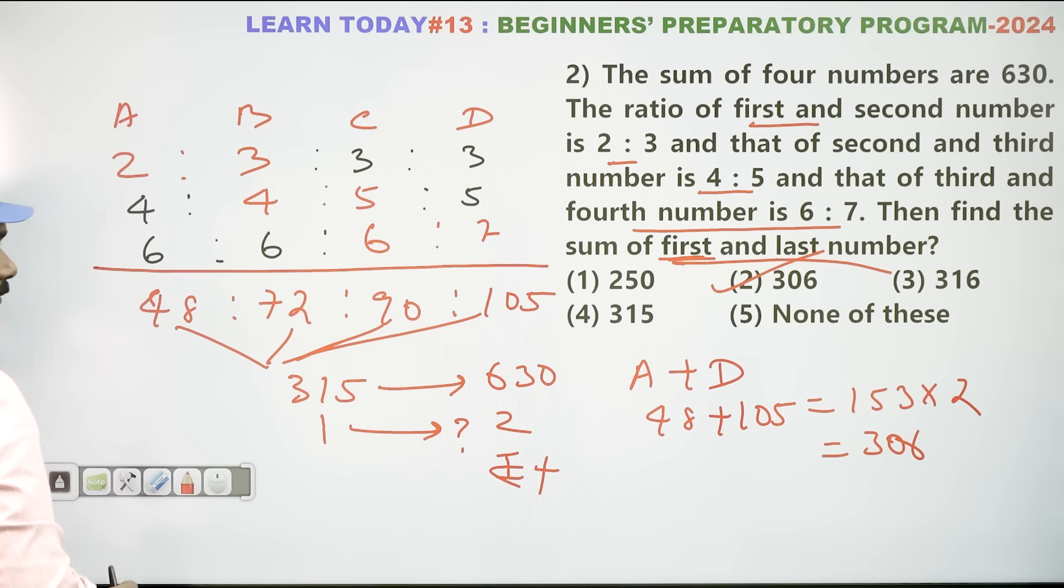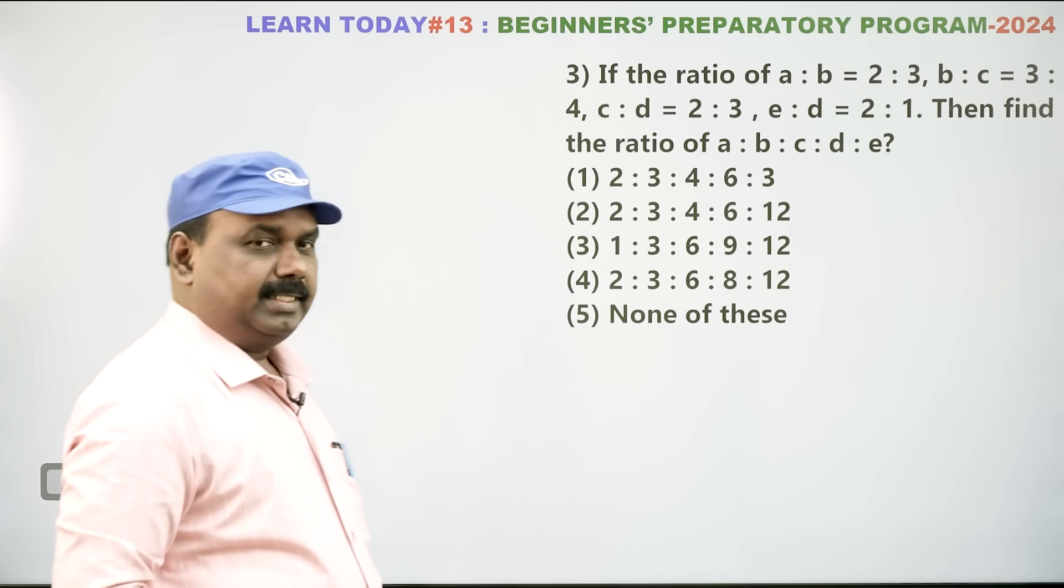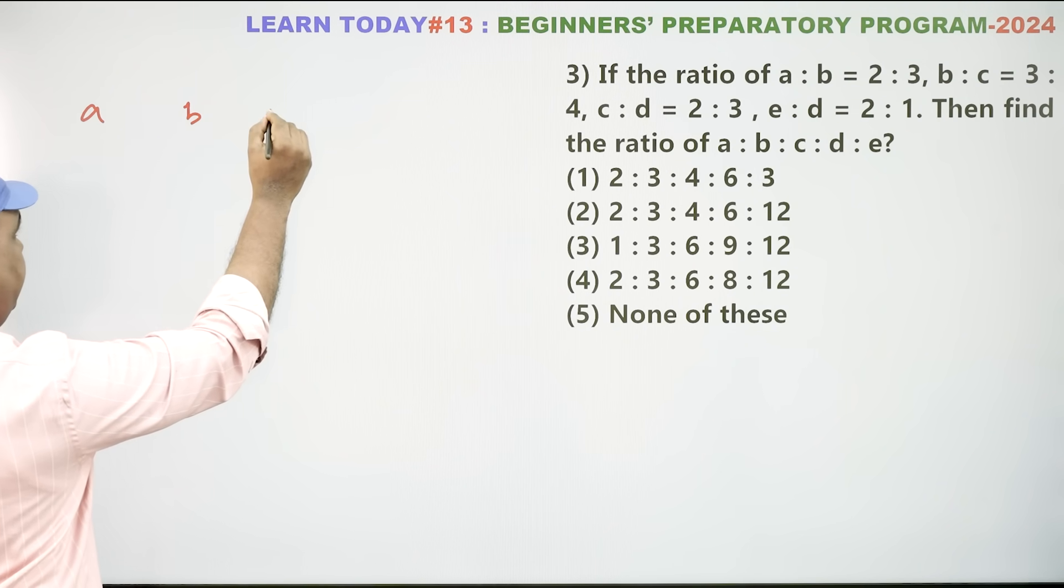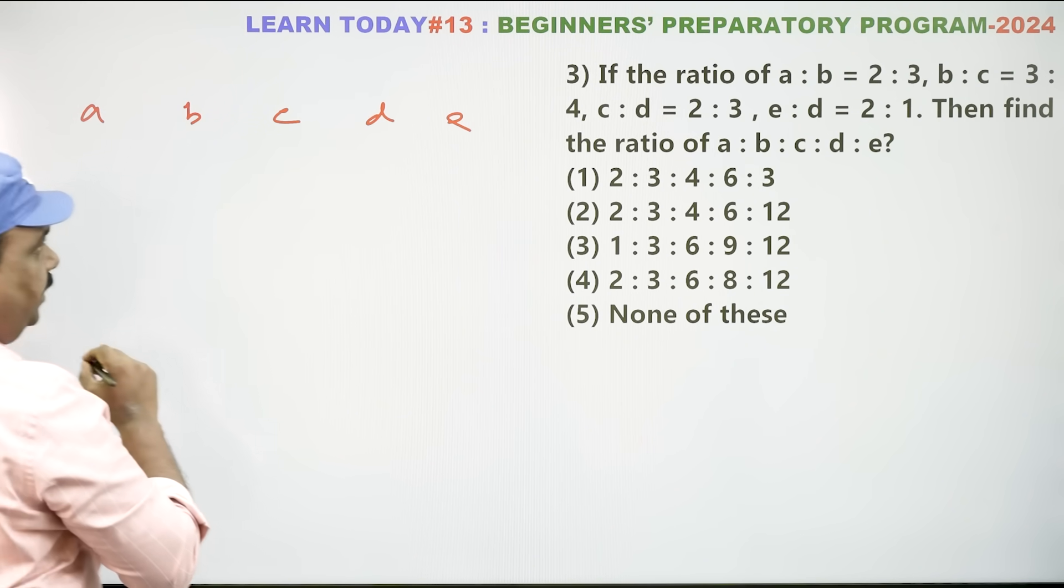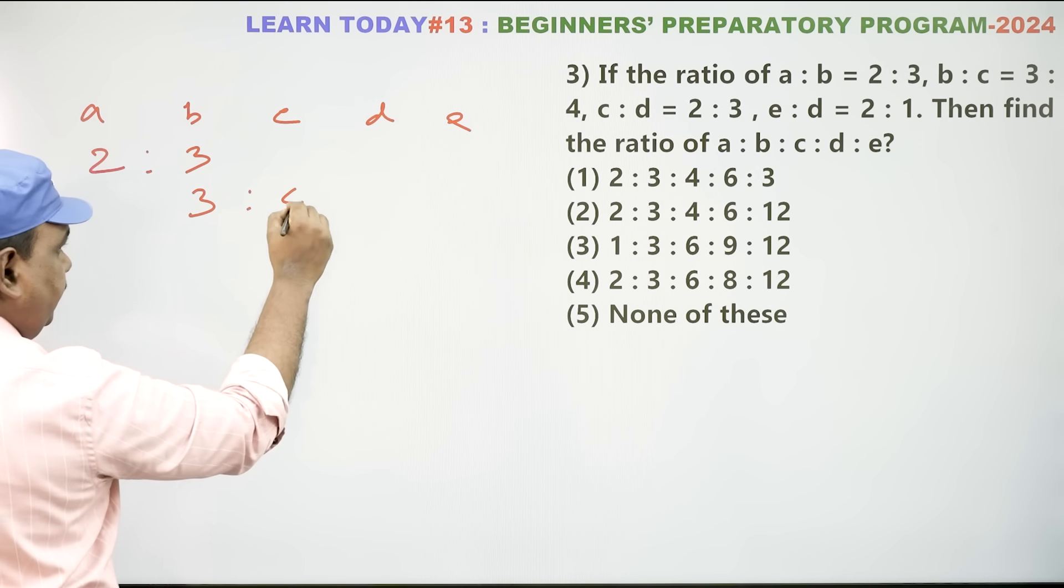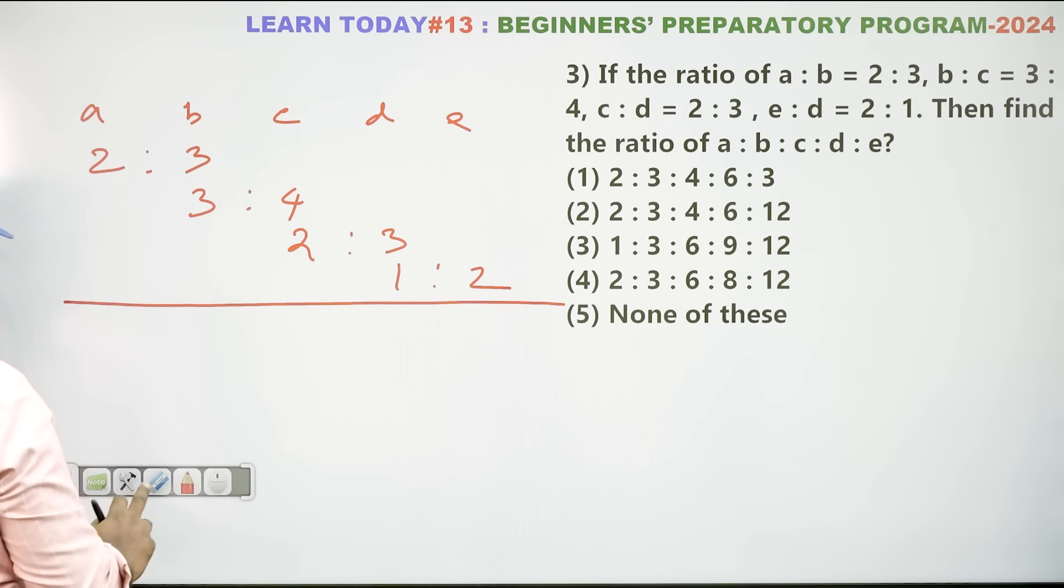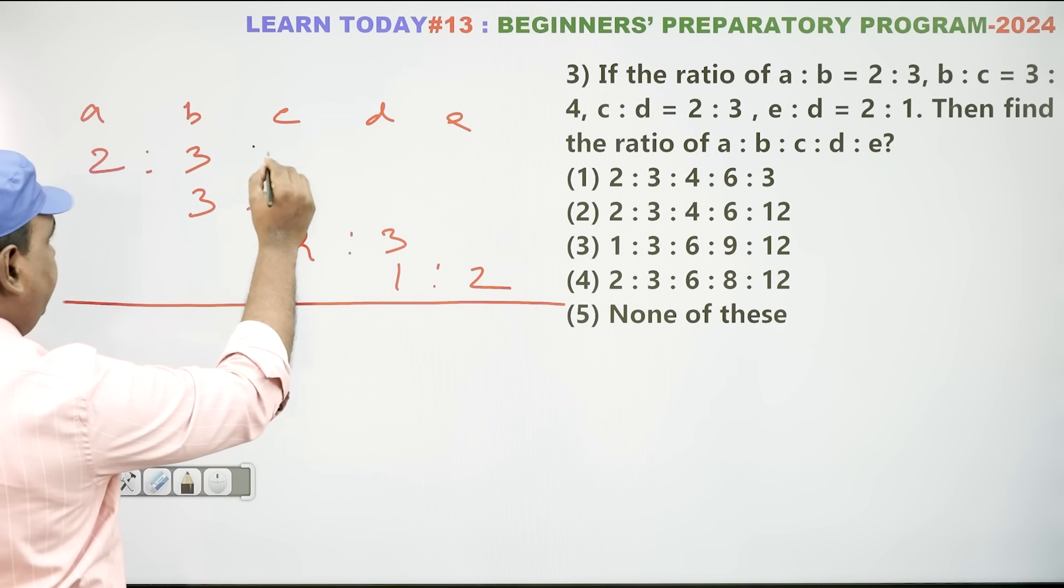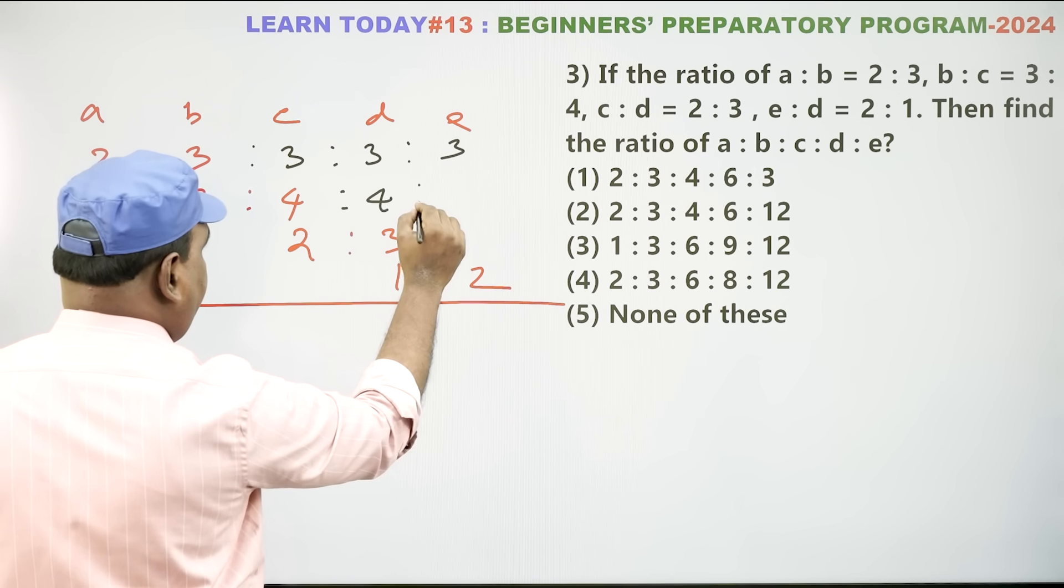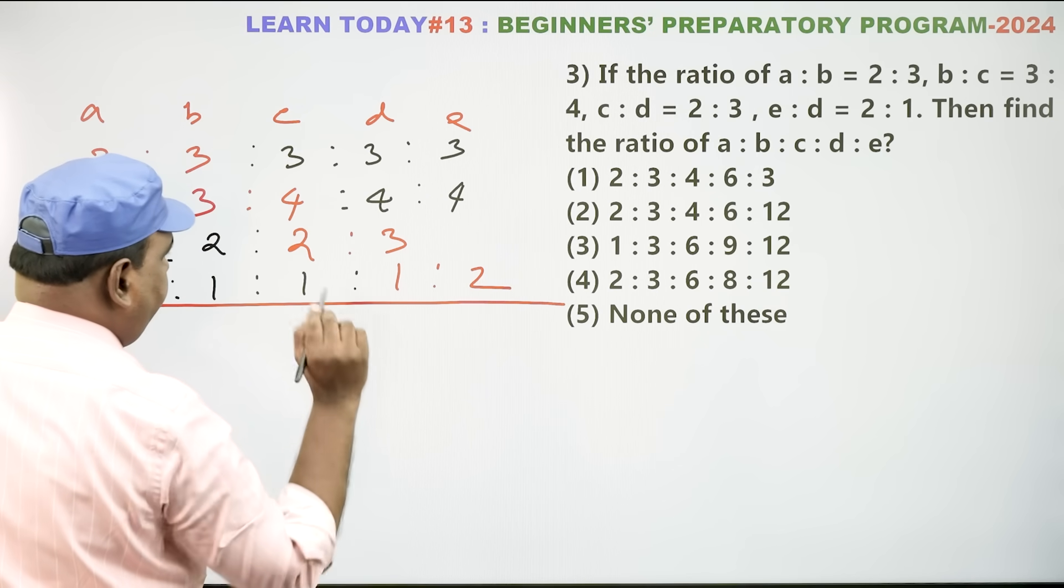Then next. You need video pause and do it. Question number 3. In 5 ratio A, B, C, D and E. A:B ratio 2:3, 4. 2 is to 3. 3 is to 4. 2 is to 3. 3 is to 4, 2 is to 3, 1 is to 2. Overall, repeat. 3 is to 3. 3 is to 3. 4 is to 4. Again, 2 is to 2, 2 is to 3, 1 is to 2. 1 is to 1.